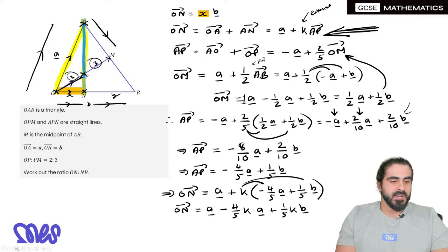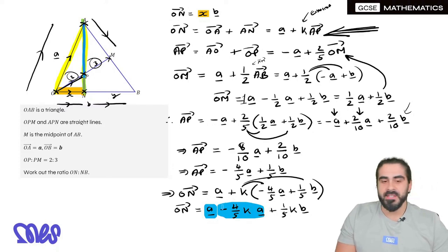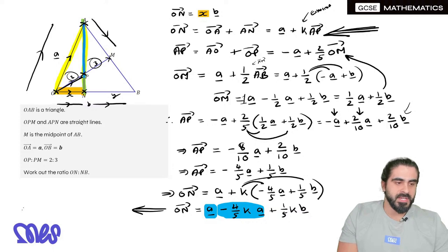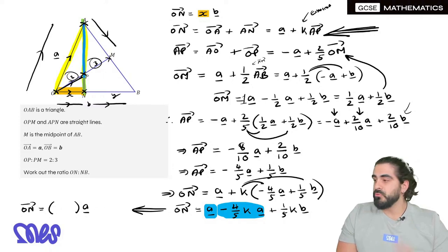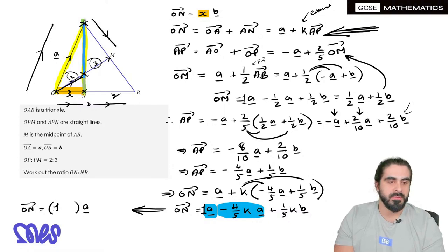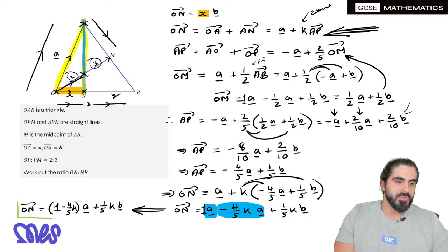And now we collect the like terms. So this and this. We factorize out A. So O to N is, open up a bracket, write A. Then we write the coefficients. So the coefficient of A here is one. Then we have minus four fifths K. Then we have plus one fifth KB. So here's O to N.